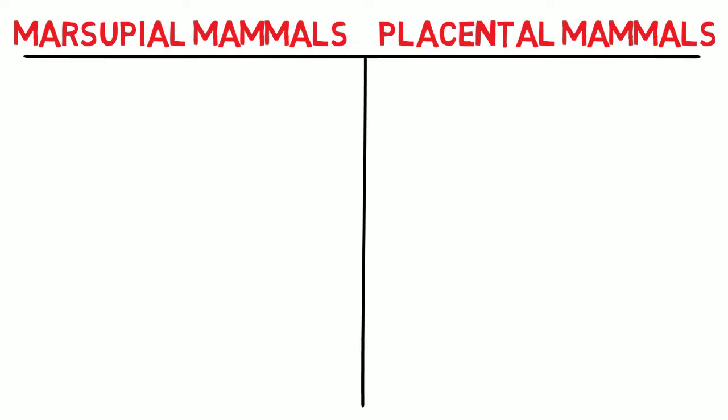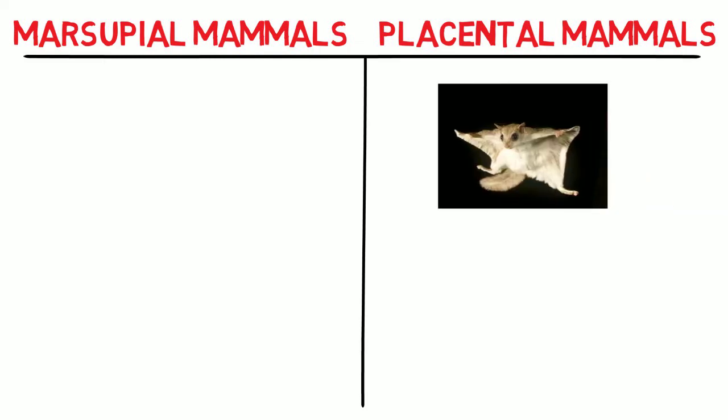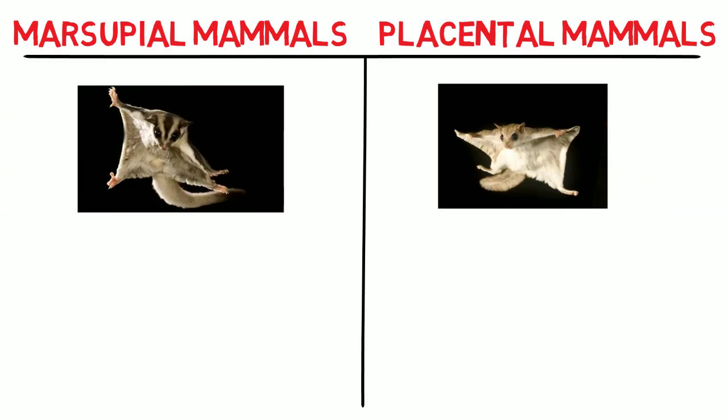There is a glider in both groups: the flying squirrel in placentals, and the flying phalanger in marsupials. Both share a similar common ancestor, and though separated, they evolved many similar traits for gliding.